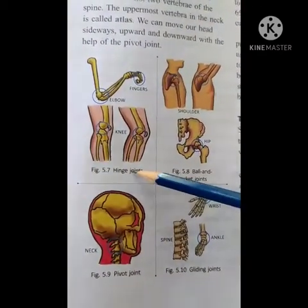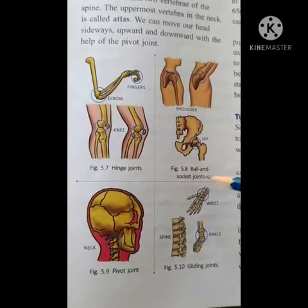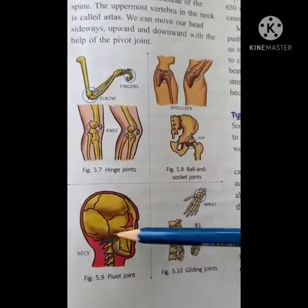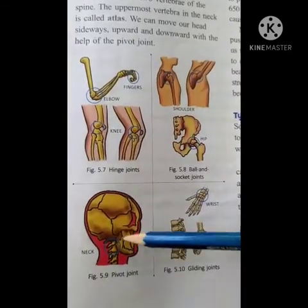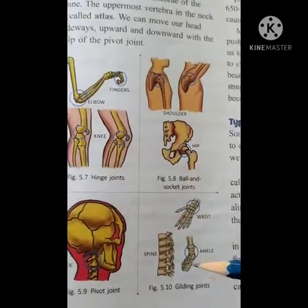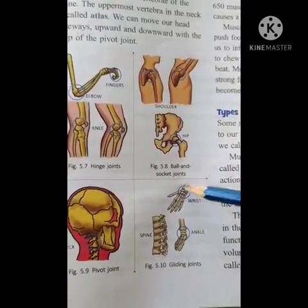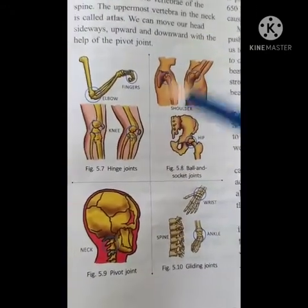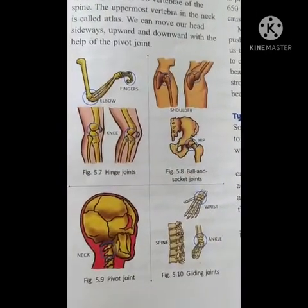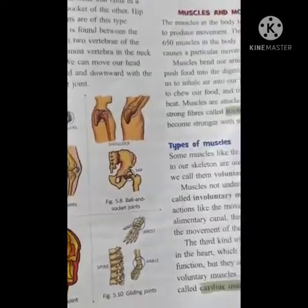So these are all the types of joints: the hinge joint at the elbows and fingers; the ball and socket joint at the shoulder and hip girdle; the pivot joint at the first two vertebrae — the first vertebra is called the atlas; and the gliding joint at the ankle and wrist. From these examples you can easily know where each type of joint is present.